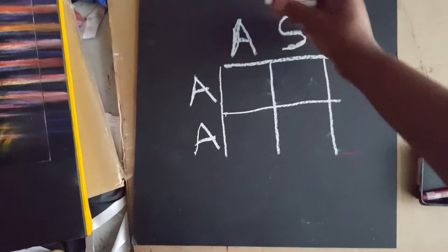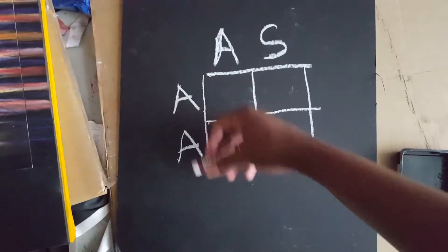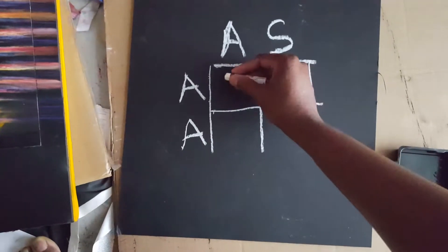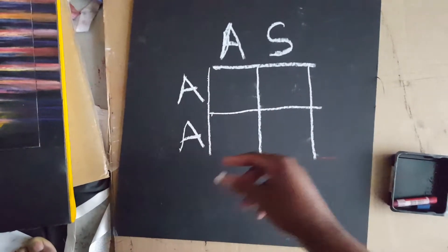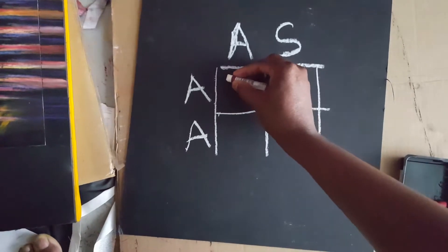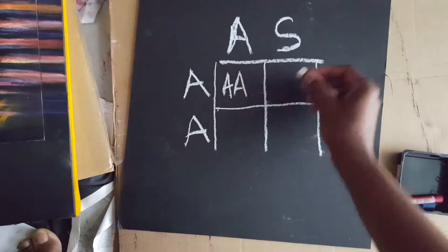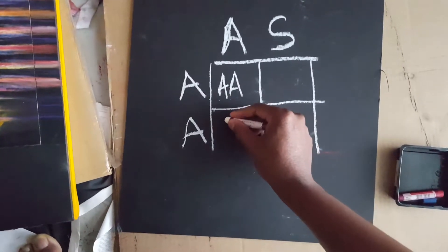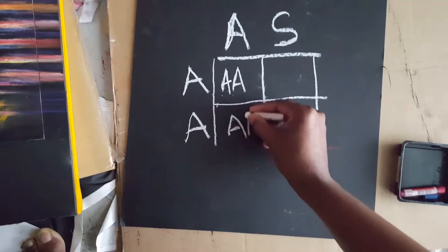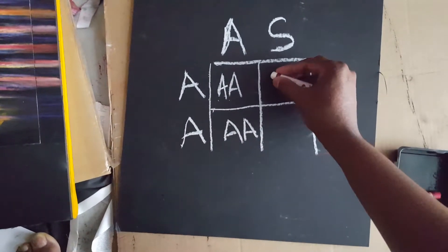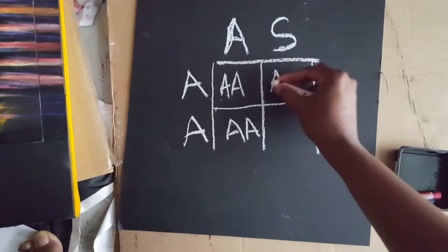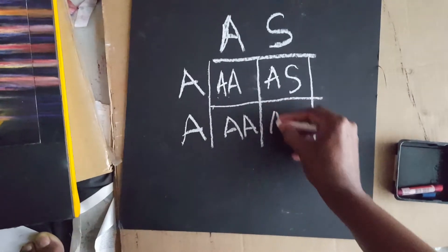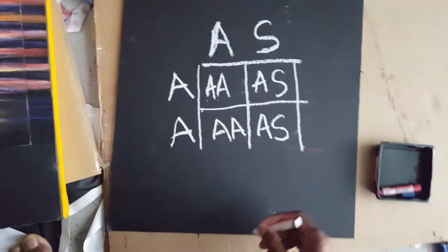What happens when a person with normal hemoglobin and a person with trait has a child? They have a one in four chance. Each time they have a child they have a 25% chance for normal. Here is another normal. Here you have another chance that it's A and S, so that's a child with the trait, and here is its chance.